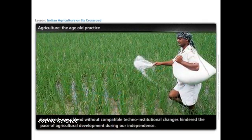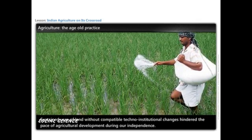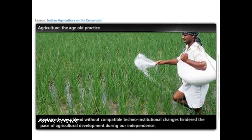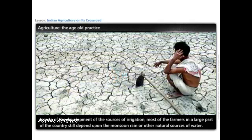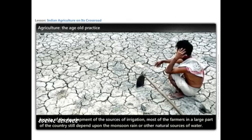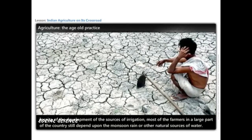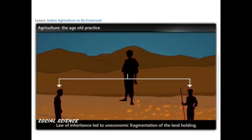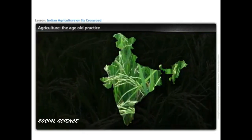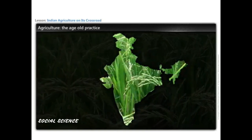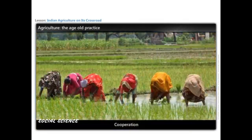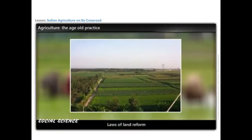Sustained use of land without compatible techno-institutional changes hindered agricultural development. Despite development of irrigation sources, most farmers in large parts of the country still depend on monsoon or other natural sources of water. The law of inheritance led to uneconomic fragmentation of landholdings. Recognizing agriculture's importance, it was given highest priority in the first five-year plan. Changes introduced included collectivization, consolidation of landholding, cooperation, abolition of zamindari, and land reform.